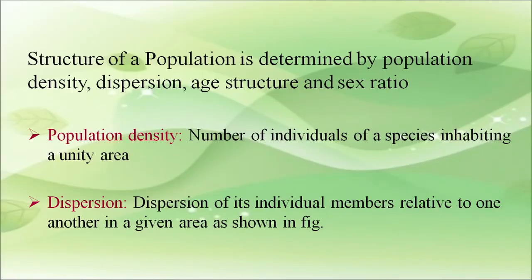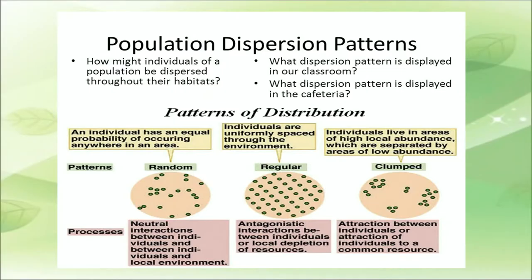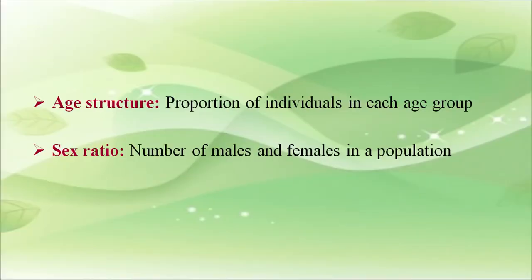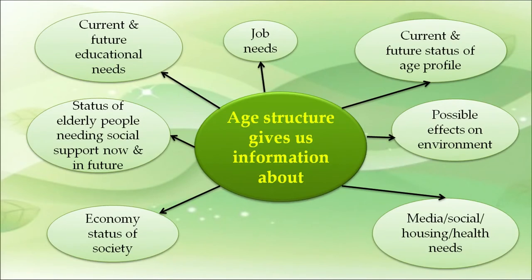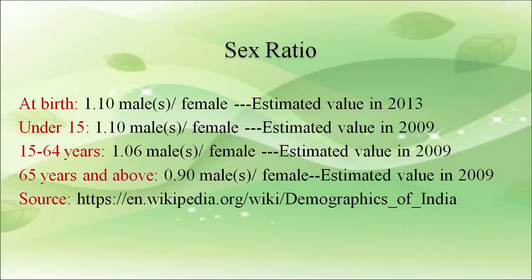The structure of a population is determined by population density, dispersion, and sex ratio. Population density means the number of individuals of a species inhabiting a unit area. Dispersion refers to how individual members are distributed relative to one another in a given area — this can be clumped, regular, or random. Age structure is the proportion of individuals in each age group. Sex ratio is the number of males and females in a population. Age structure gives information about current and future status of age profile, possible effects on environment, media, social housing, health needs, job needs, educational needs, status of elderly people, and economic status of society.